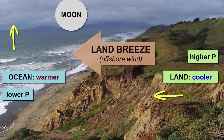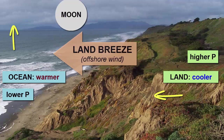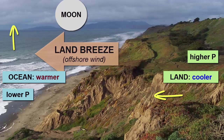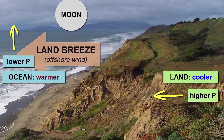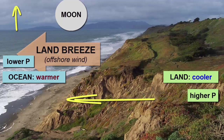A land breeze, or offshore wind, is one that moves from the land towards the ocean. It is caused usually at night when the low heat capacity of land causes it to drop its temperature quickly, meaning the air over the oceans is warmer, lower in pressure and rising, while that over the land is sinking.